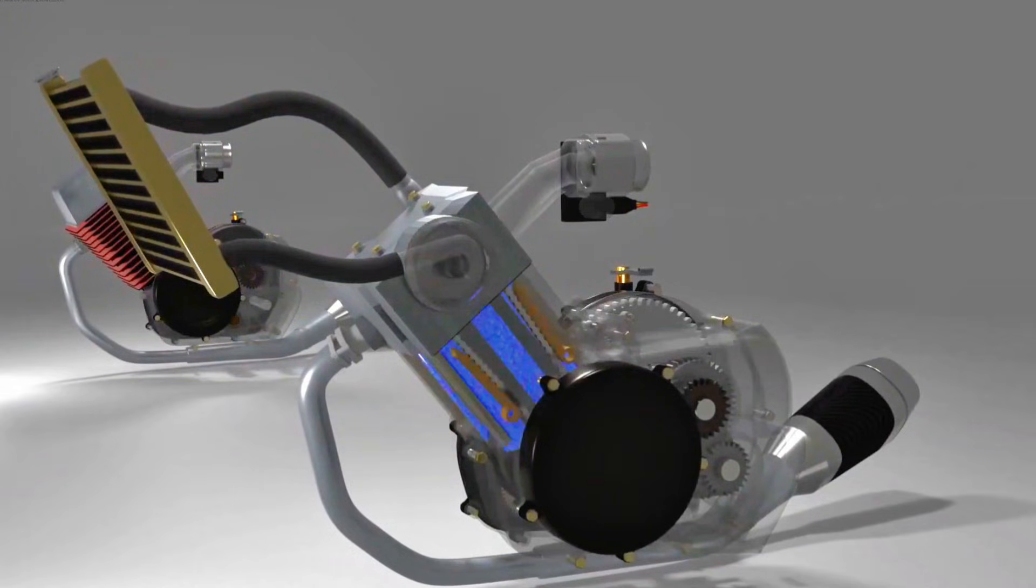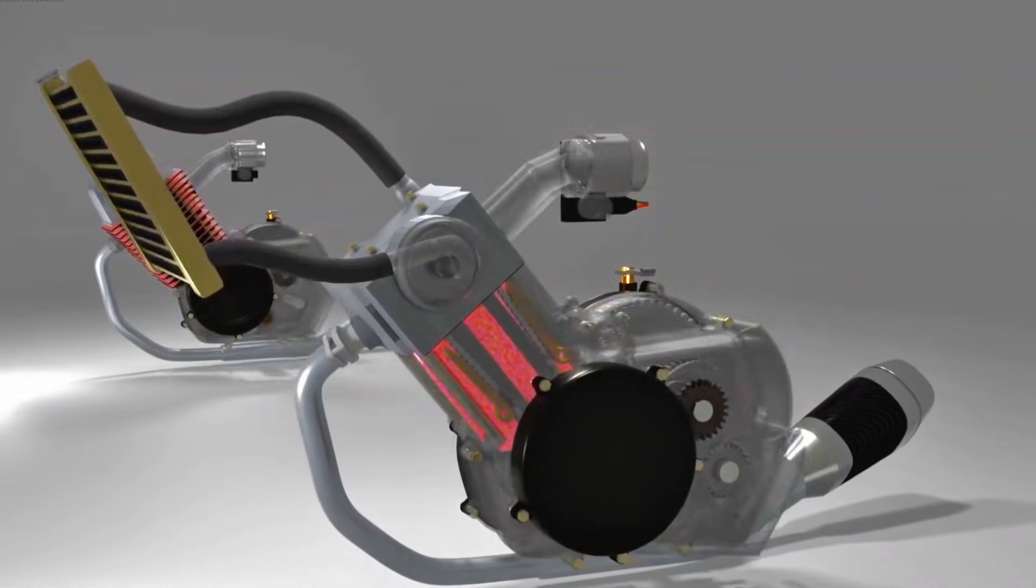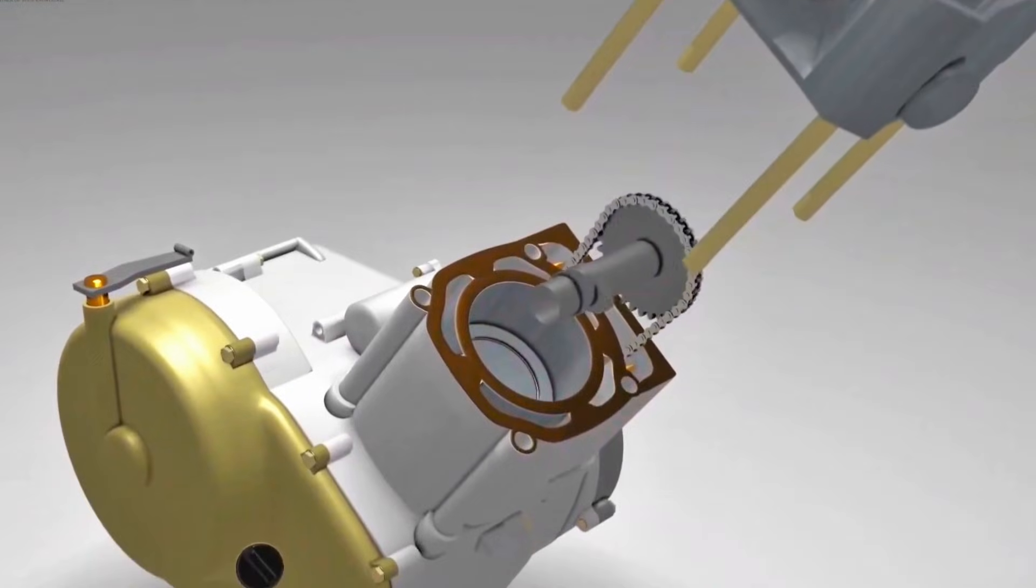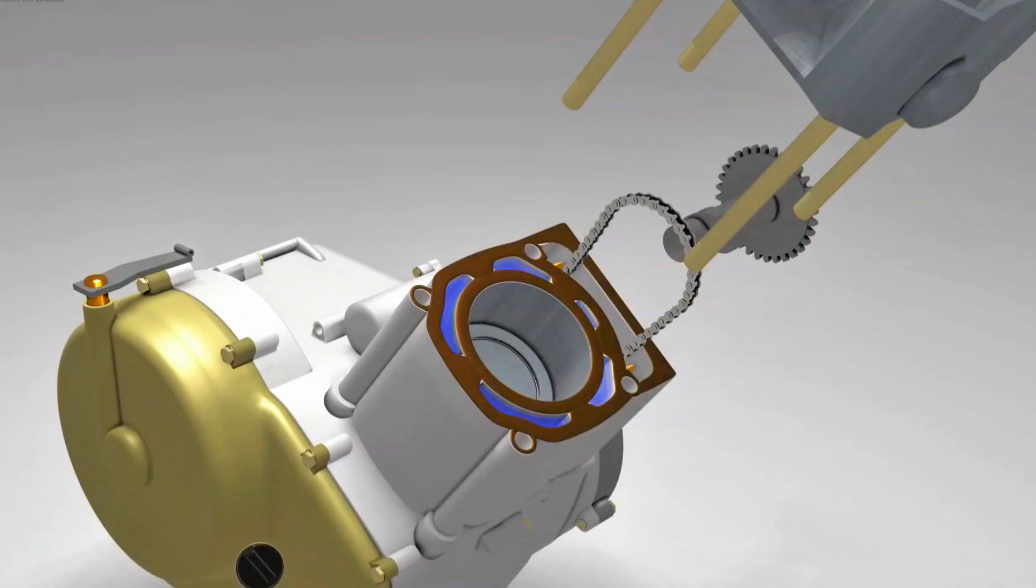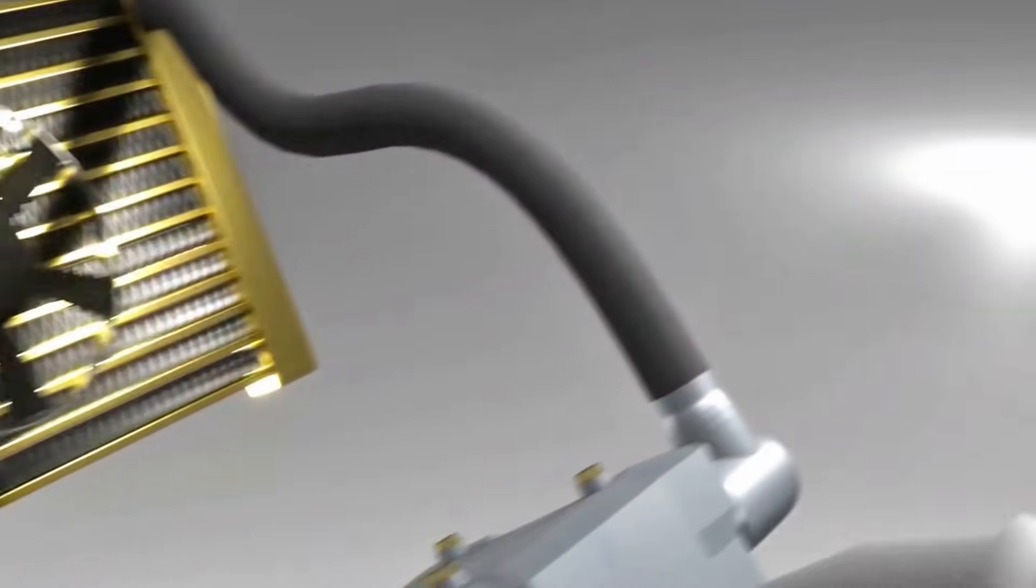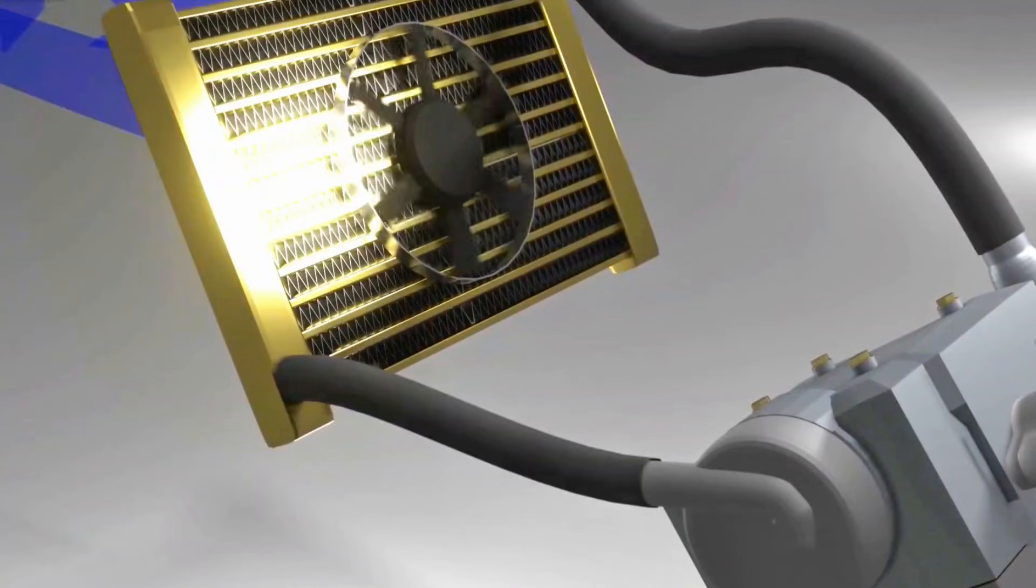The cooled water is then recirculated back into the engine block for continuous cooling. This cooling system is considered more effective because water can circulate through the deepest parts of the engine, whereas air cooling only affects the outer surface. Additionally, water-cooled systems are equipped with electric fans, ensuring cooling even in traffic conditions.